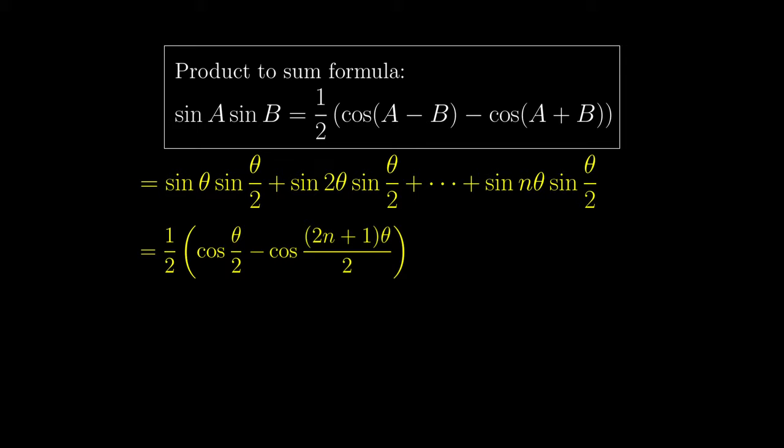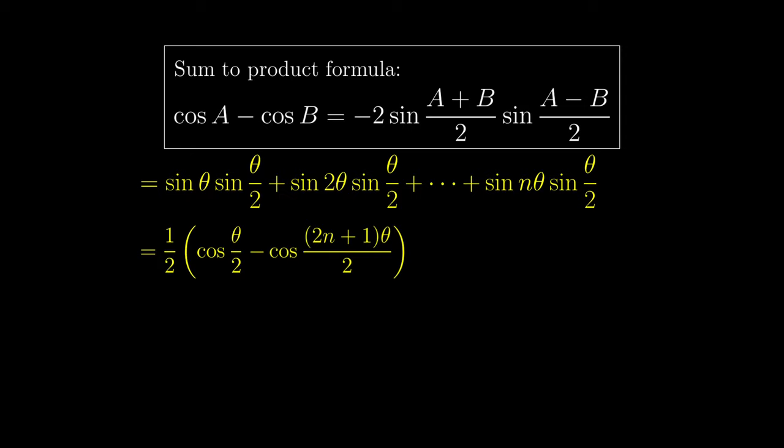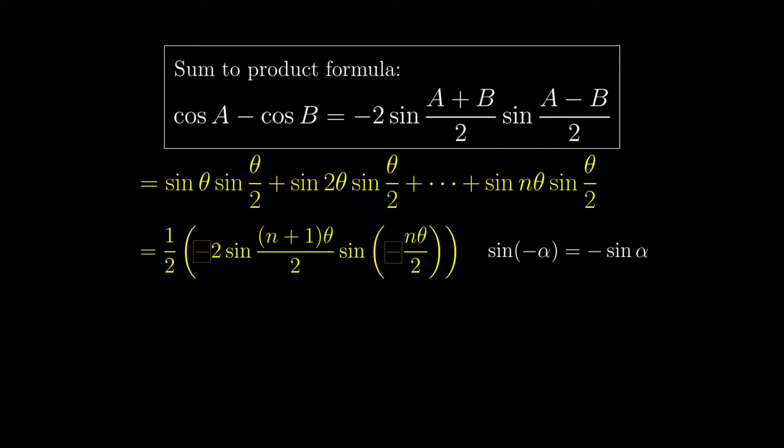This is quite simplified, but we want to further manipulate it for reasons I will explain later. This is done by considering the sum-to-product formula, which is basically the reverse of the previous formula. We apply the formula, and then realize that we can pull out the negative sign to the front, so these two negative signs cancel out each other.